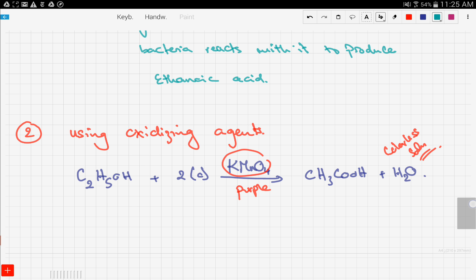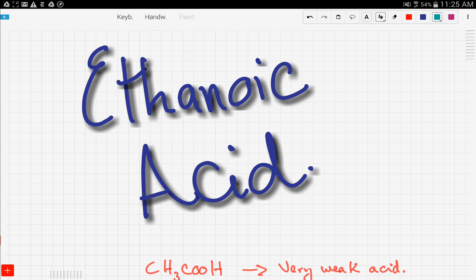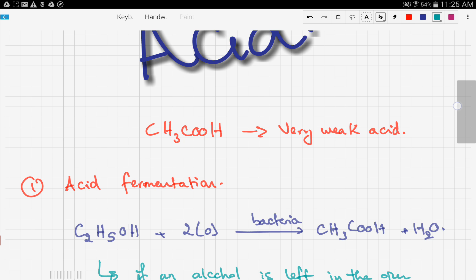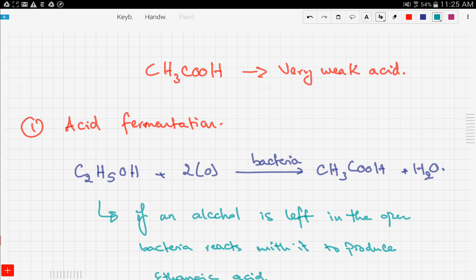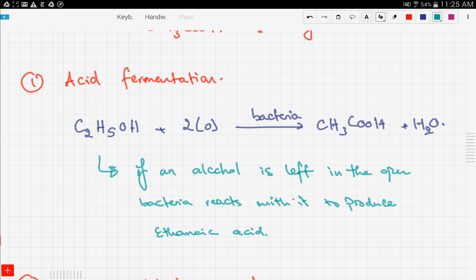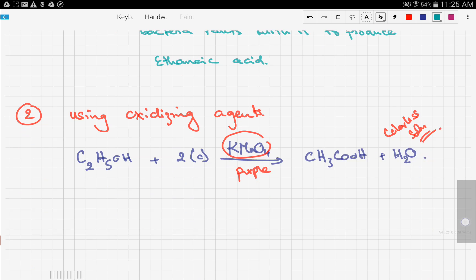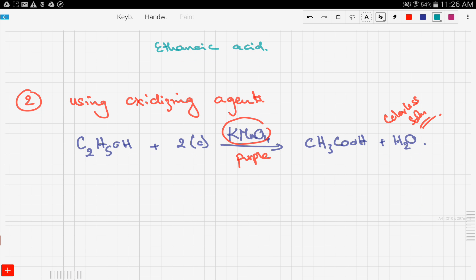Let's recap. In this video, we focused on how to make ethanoic acid using two different methods. The first method is acid fermentation, the process where an alcohol is left out in the open and bacteria acts on it, producing ethanoic acid. We then moved to the next method...